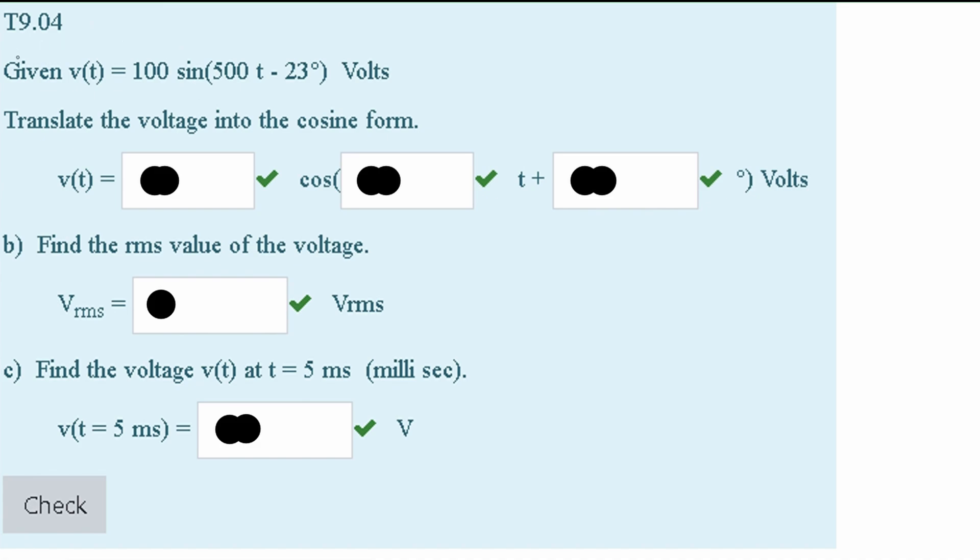In this problem, we are given that our V of T is equal to 100 sine 500 T minus 23 degrees, and this is for volts. We need to translate the voltage into our cosine form.